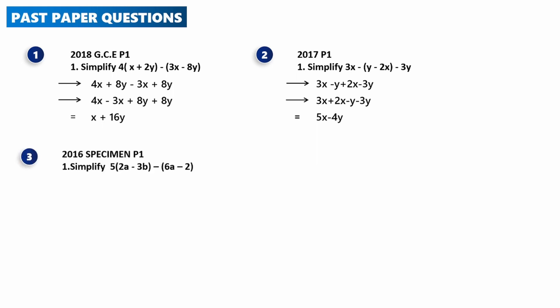2016 Specimen Paper 1: Simplify 5(2a − 3b) − (6a − 2). Expanding: 5 × 2a = 10a and 5 × −3b = −15b; then the negative multiplies 6a and −2, giving −6a + 2. So we have 10a − 15b − 6a + 2. Grouping like terms: 10a − 6a = 4a, and −15b and +2 have no like terms. The final answer is 4a − 15b + 2.